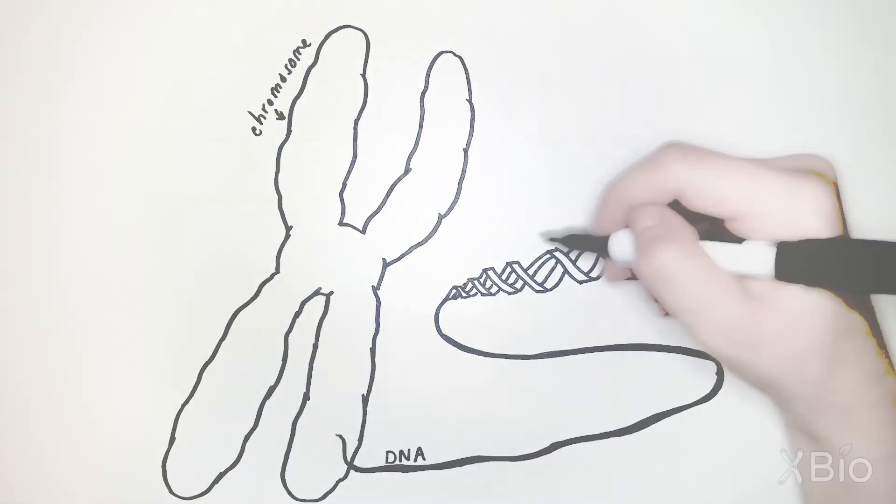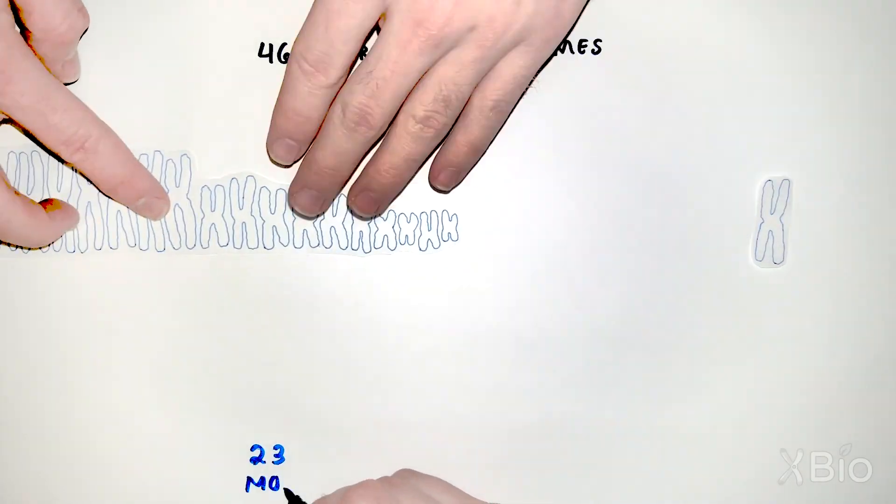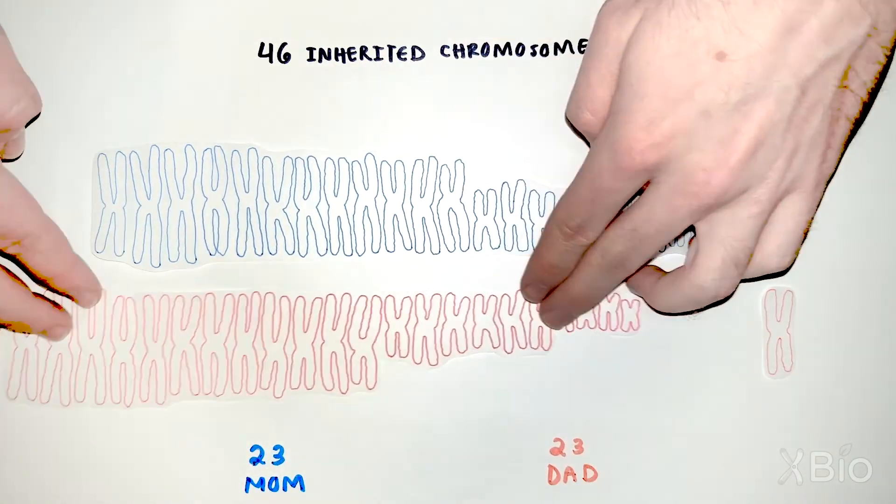Your cells have 46 chromosomes, and they come in pairs, 23 that you inherited from your biological mother and a matching pair of 23 chromosomes from your biological father.